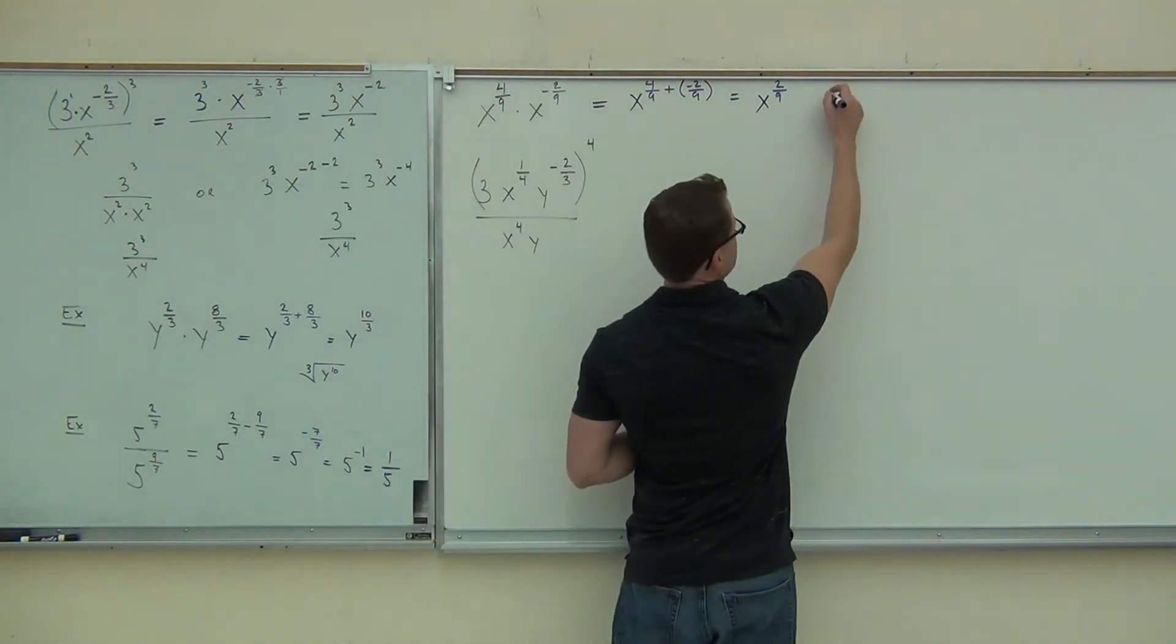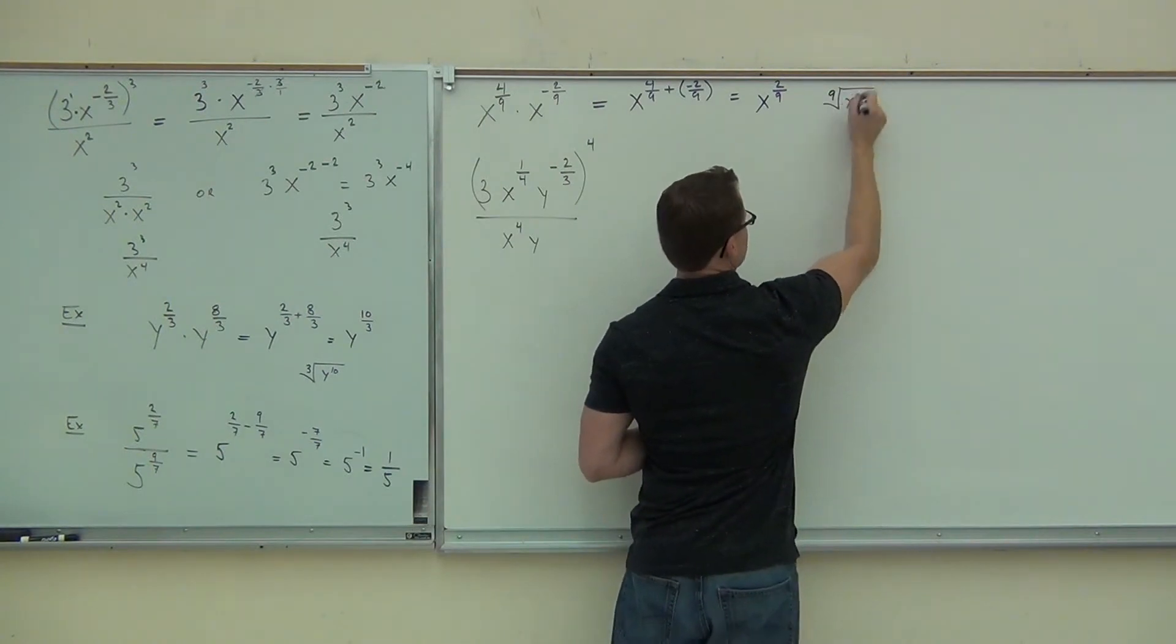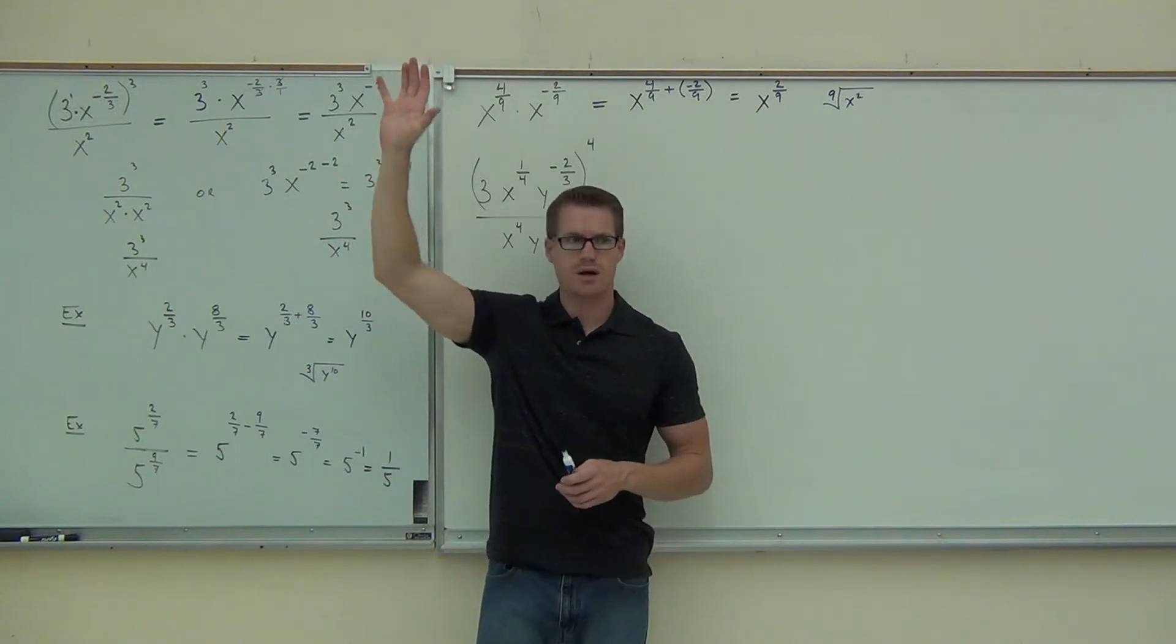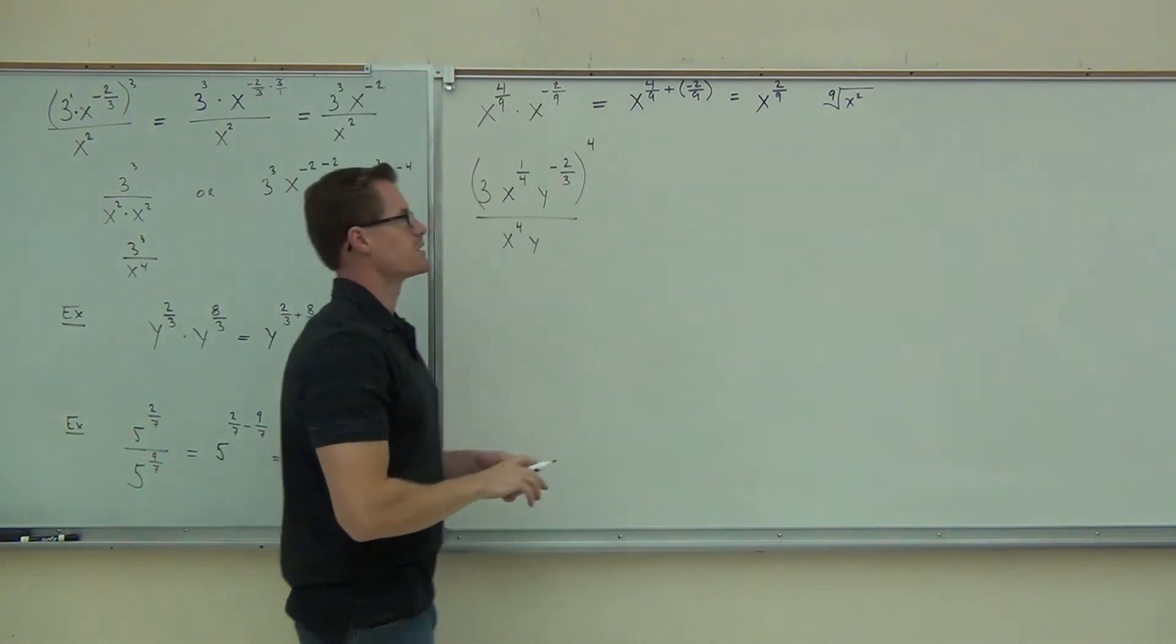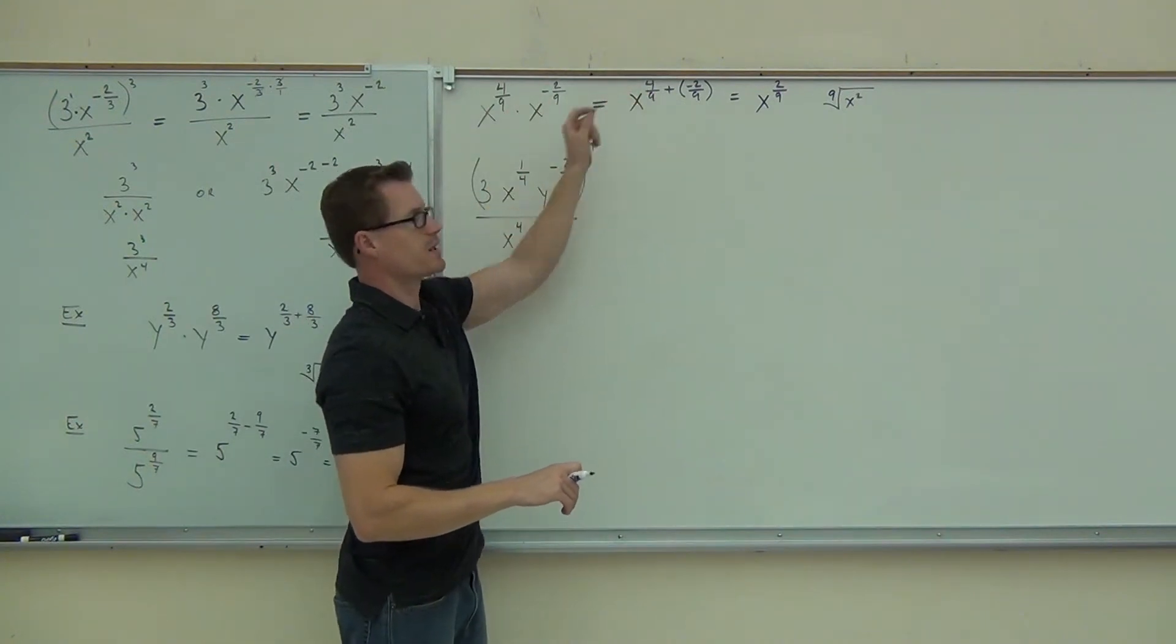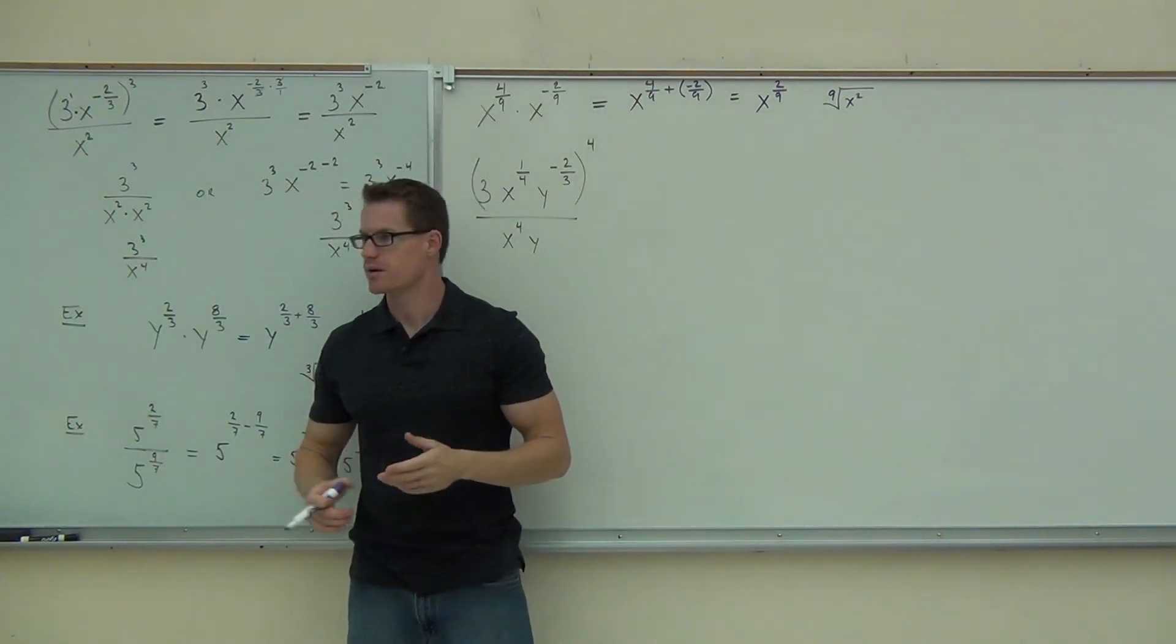You could write this as a ninth root of x squared. I don't know how many people are three for three on those ones. Good for you. If you're not, review those rules that you missed. Was it a sign error? Was it subtract or was it a multiply instead of adding? Those are the big ones right there.